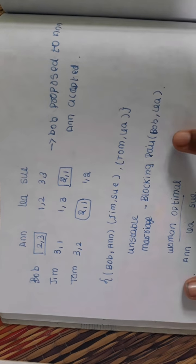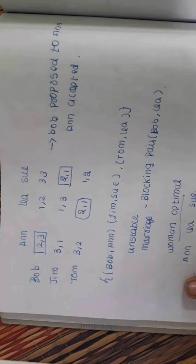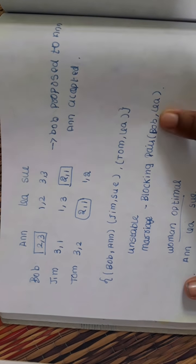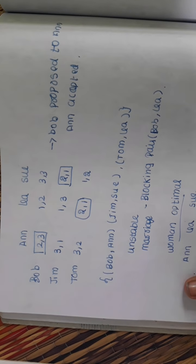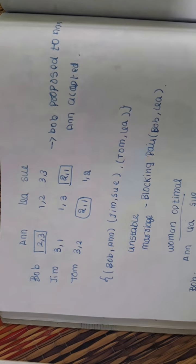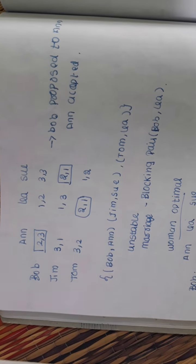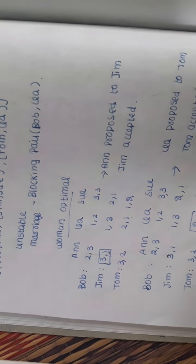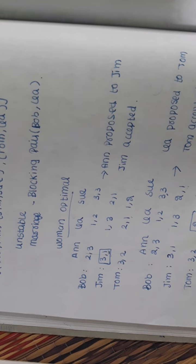This is the blocking pair. Who will change the pair? First, we will have a link. Lee will be second priority. So this is blocking pair. The third is blocking pair. The next step is to change the pair. If we do this, we will change the pair.